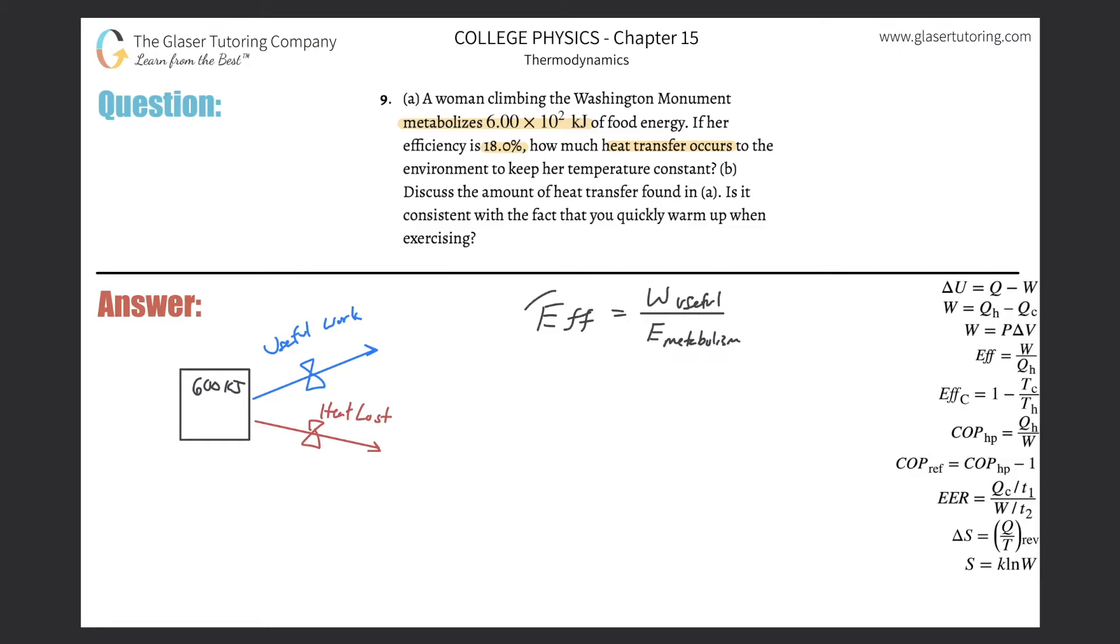We know the efficiency, so we can find the useful work. The useful work is equal to efficiency multiplied by the metabolism. This is going to be 0.18—you've got to convert that into a decimal—metabolism is 600 kilojoules. This is going to be 0.18 multiplied by 600.